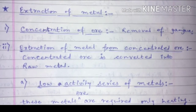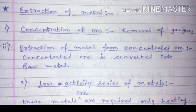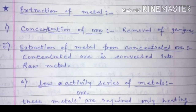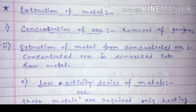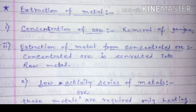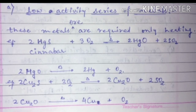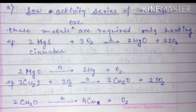The concentrated ore then goes through a specific process — extraction of metal — from which we get the raw metal. Because metals have different kinds of activity and reactivity, we need to use different processes to extract them. For metals which are low in the activity series — such as mercury, platinum, gold, silver, and copper — these metals can be easily extracted from their ore. We only need to apply heat to get the metal.